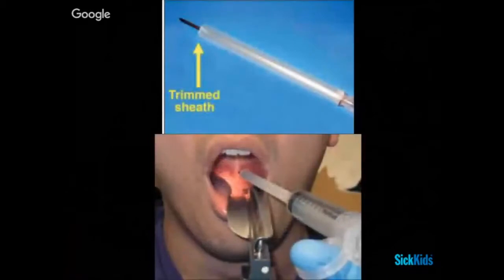Once we've calculated our depth, we're going to go and trim our sheath. We take a spinal needle but keep the sheath intact. The goal of trimming the sheath is to create a hard stop so we don't hit that vasculature while we aspirate our abscess.